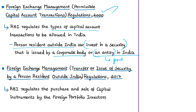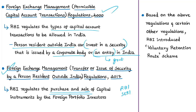Bonds and securities are debt instruments: when a corporate body or entity wants money, they issue bonds or securities to raise funds, and foreign portfolio investors purchase these bonds. Another relevant regulation is the Foreign Exchange Management (Transfer or Issue of Security by a Person Resident Outside India) Regulations 2017, under which the purchase and sale of capital instruments by foreign portfolio investors is regulated. A foreign portfolio investor may also undertake short selling and lending and borrowing of securities, subject to conditions stipulated by RBI and SEBI from time to time. Based on these regulations, RBI introduced the Voluntary Retention Route scheme.